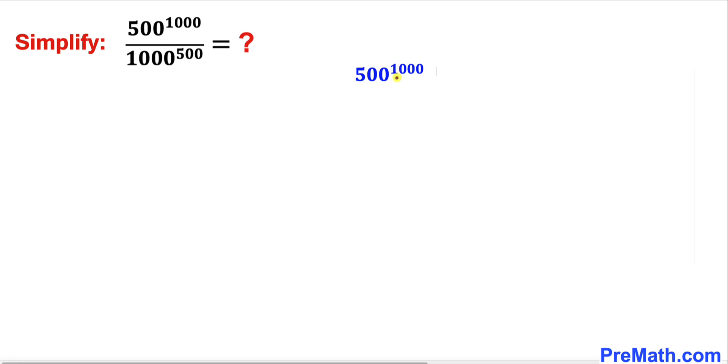Now let's focus on its exponent 1000, which could be written as 500 plus 500, isn't it? And now let's recall this product rule.